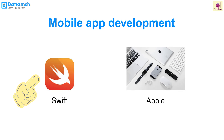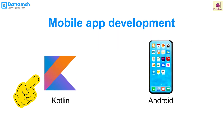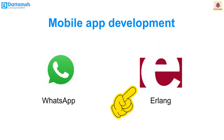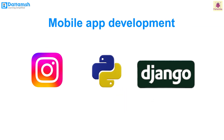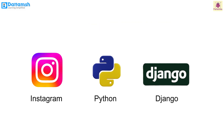Mobile app development: applications for mobile devices like smartphones and tablets are developed using specialized programming languages. Swift is Apple's primary language, and Kotlin is Google's primary language for Android app development. WhatsApp relies on Erlang for its messaging servers, enabling support for millions of users per server.